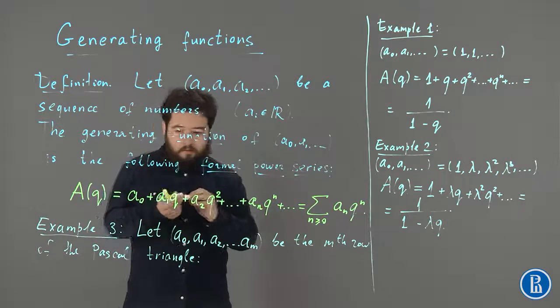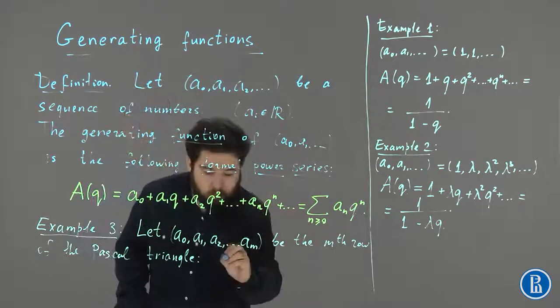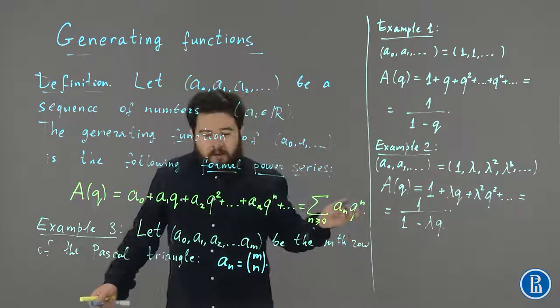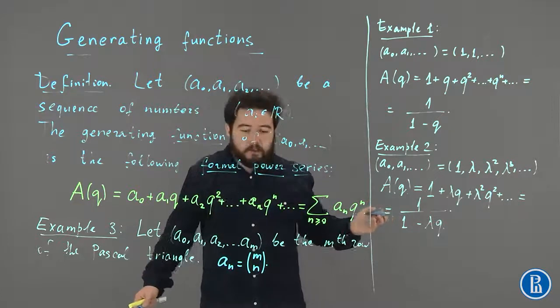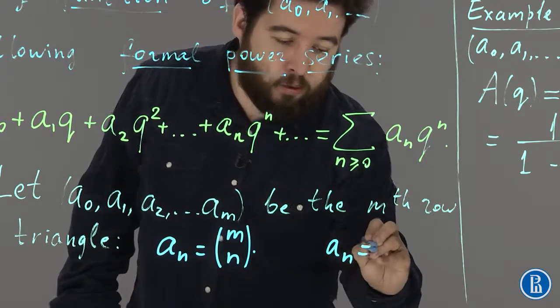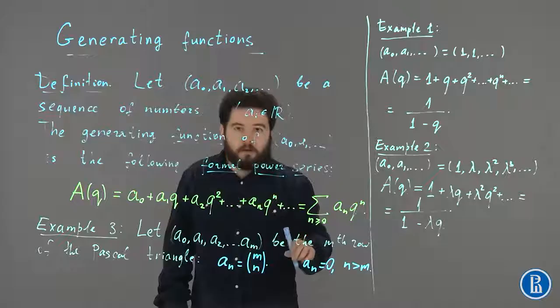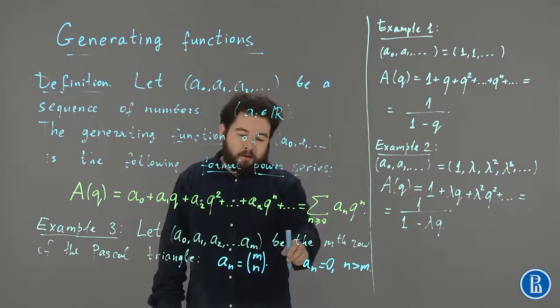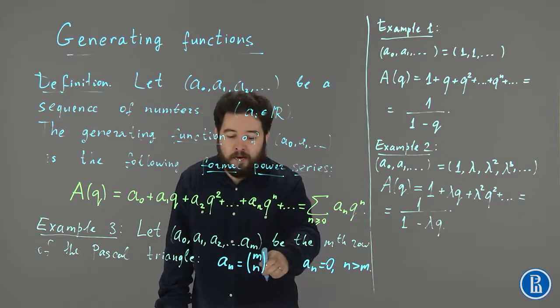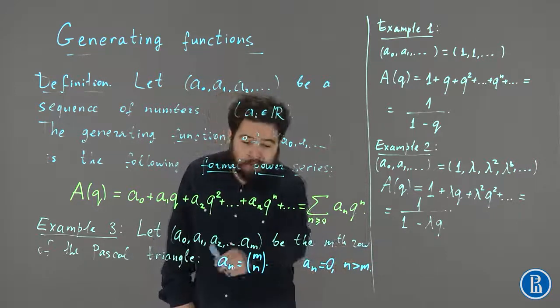This means that a_n is just m choose n. Or, you can suppose that this sequence is infinite, so you can think that a_n is equal to 0 for n greater than m. So, this definition makes sense, because the number of ways of picking an n element subset of an m element set is equal to 0 if n is greater than m. So, this makes perfect sense.